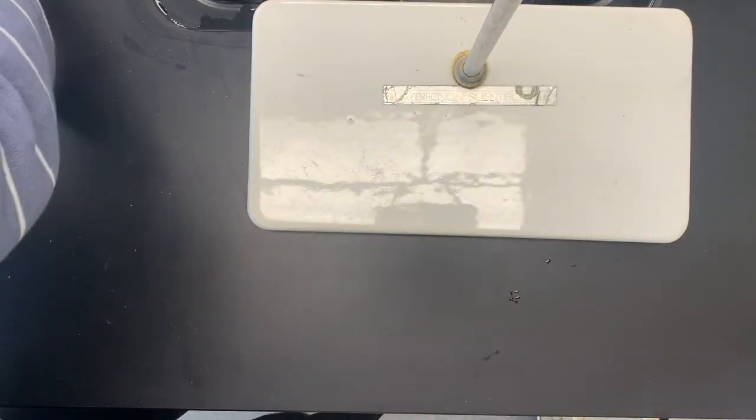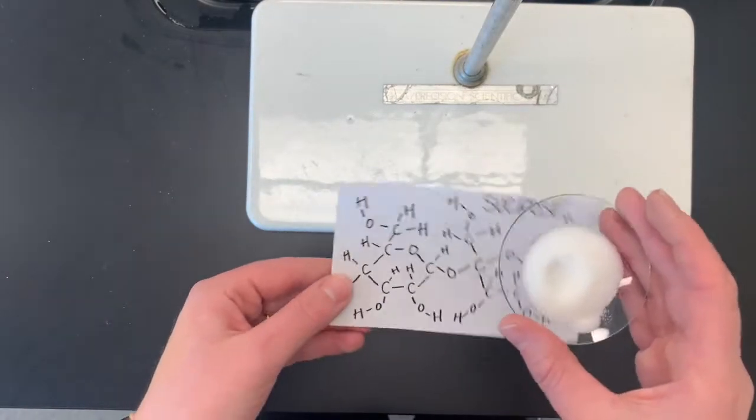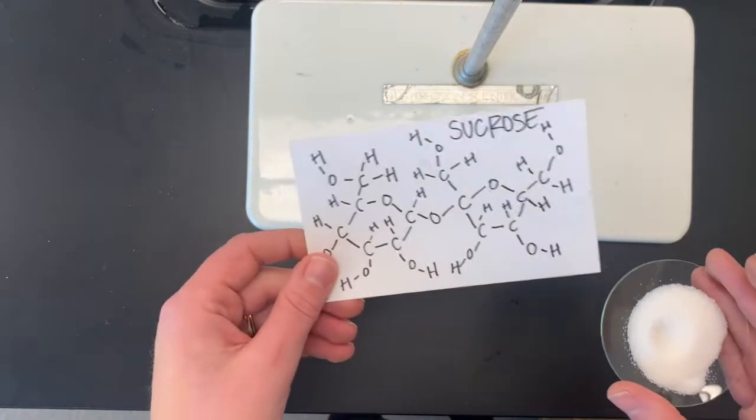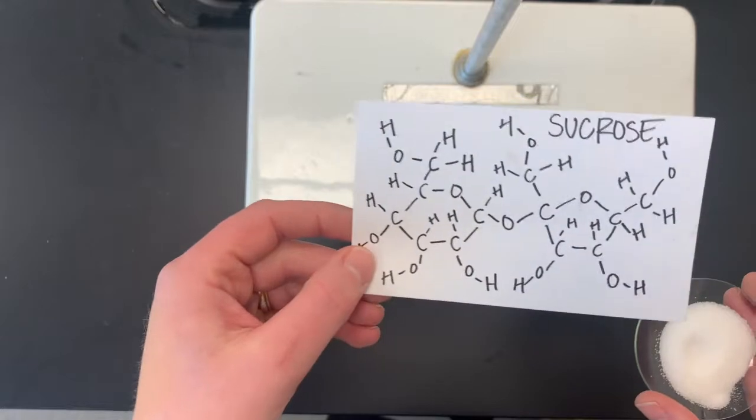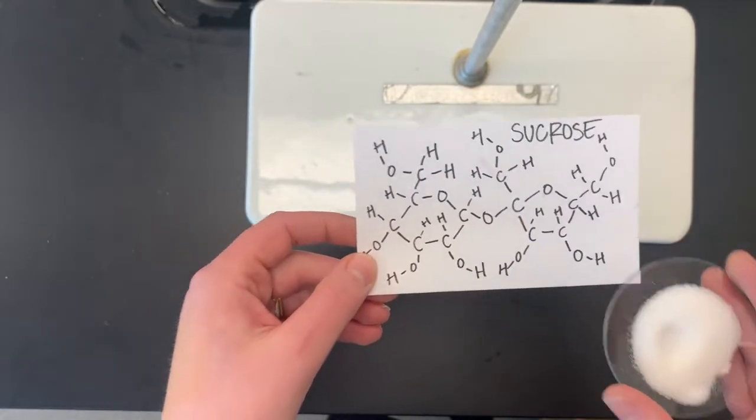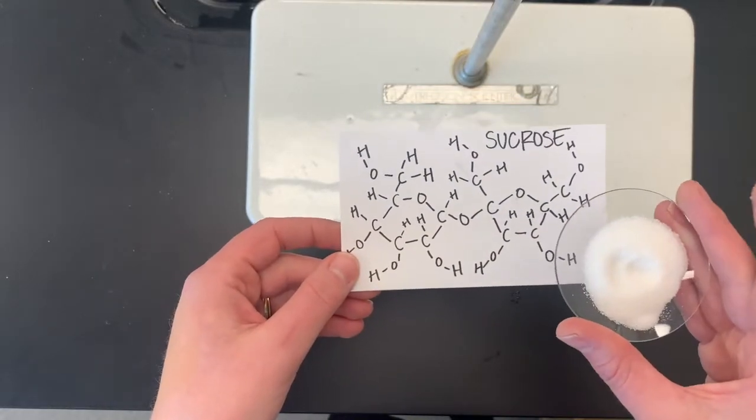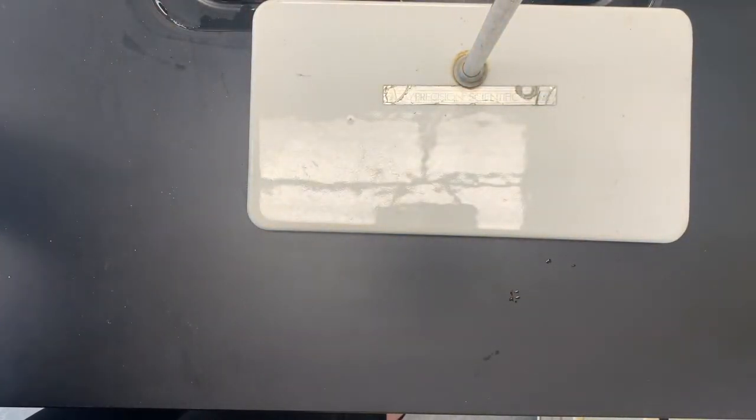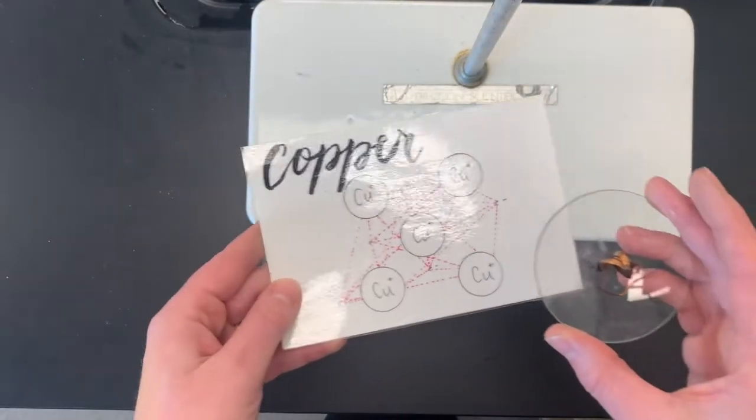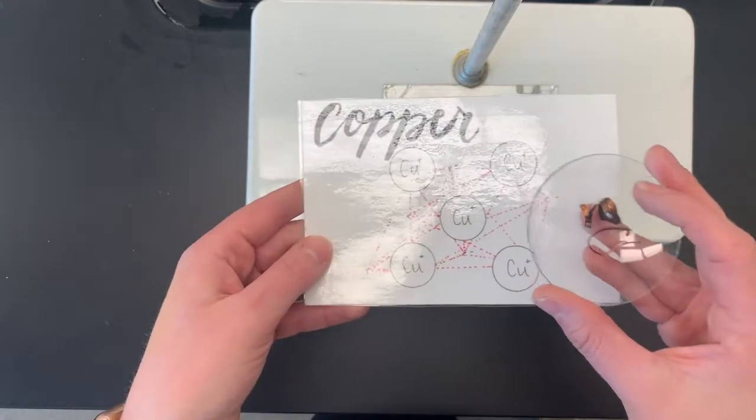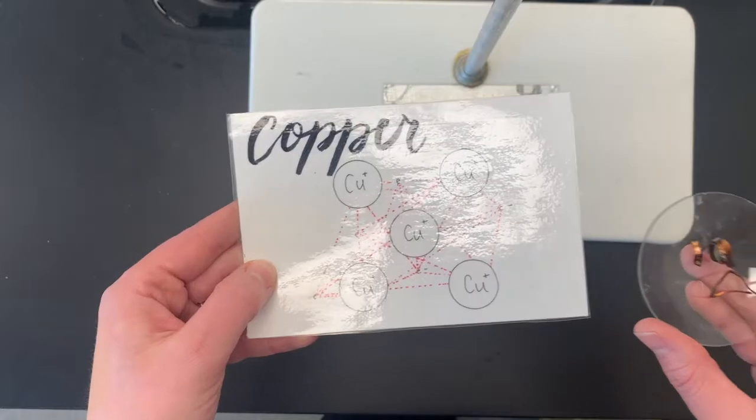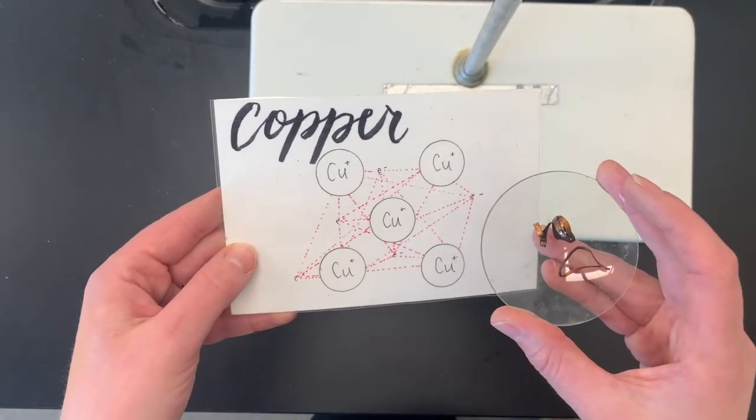Next we have sucrose, aka this is table sugar. So this is what you might mix into some nice lemonade. There is one molecule of sucrose right there. And there it is in the watch glass. Next up we have copper. So I have some copper in the watch glass, some copper wire here, and then that is its bonding modeled.